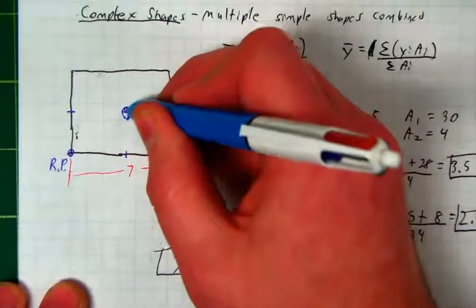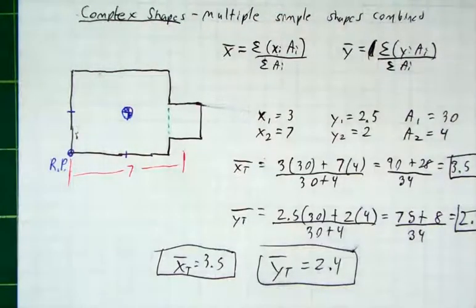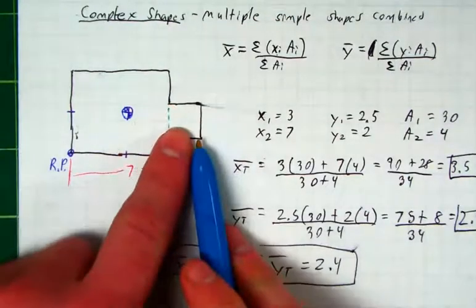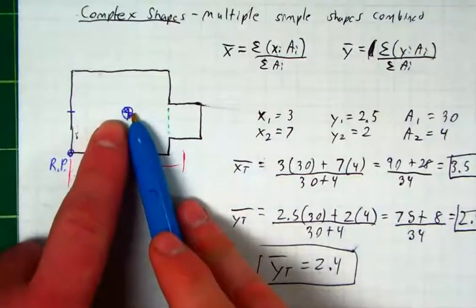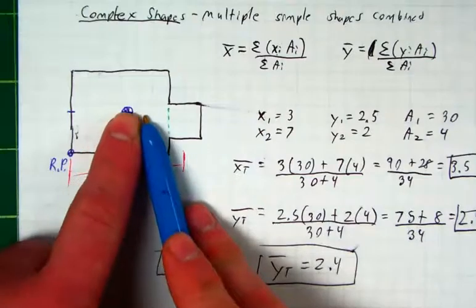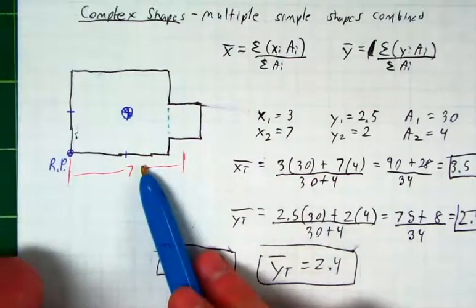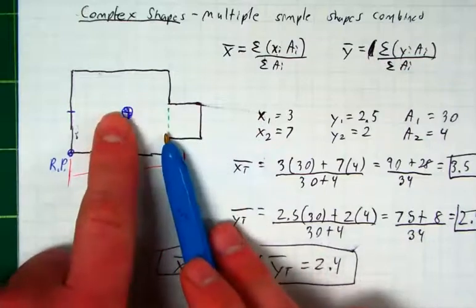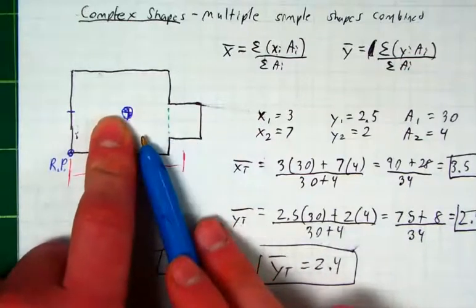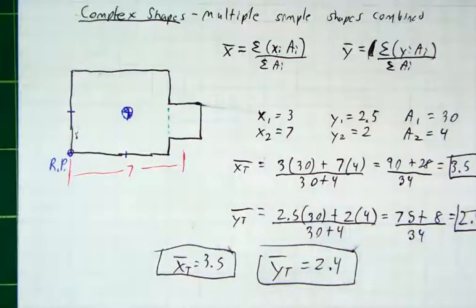And again, really think about it. Does it make sense that this shape on the bottom right added to this would pull our centroid down and to the right from the bigger shape? But does it make sense that the smaller area would affect the centroid a little bit less than the bigger one? This is what we mean when we say average shape.